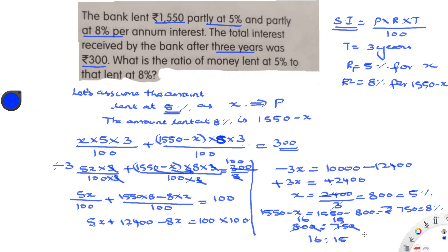This is a straightforward problem, but you need to understand that two interest rates are given — one at 5% and another at 8% per annum. Since the principal amounts for each rate are unknown, first assume x for 5%, then 8% is 1550 minus x. Use the simple interest formula, set the sum of both interests equal to 300, and solve by algebraic simplification.